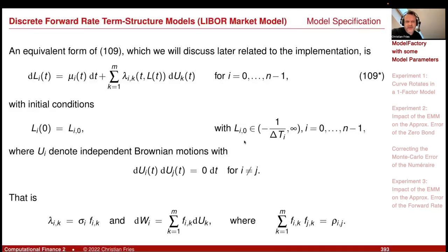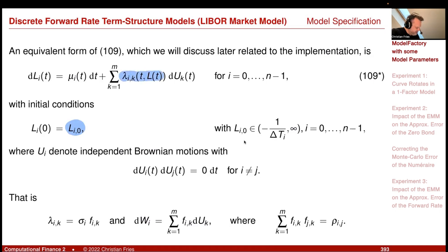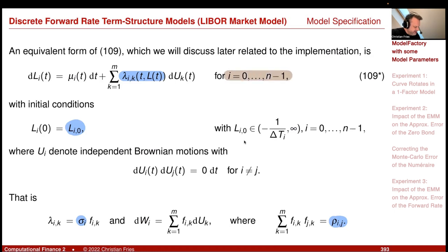Our model parameters are the initial value for the forward rate curve, and the factor loadings, which can be decomposed into volatility and correlation. There is also the time discretization behind this — the tenor discretization, considering here forward rates L_i.